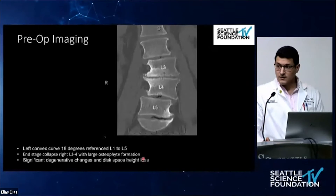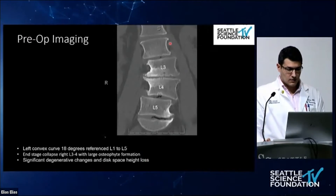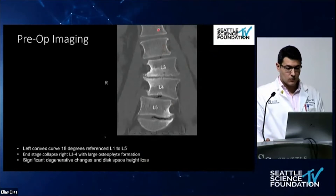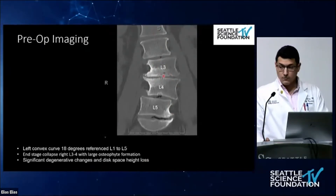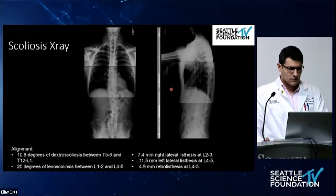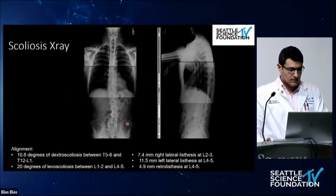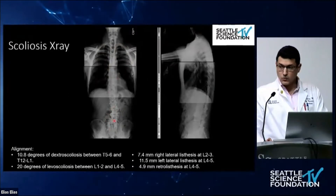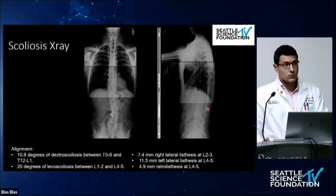This is his pre-op CT scan. He has some left convexity curve around 18 to 20 degrees referenced from L1 to L5. He had also end-stage collapse mainly over L3-4 with large osteophyte formation and multilevel degeneration. Regarding his scoliosis x-ray, he had some dextroscoliosis mainly over the upper thoracic area — again, around 18 to 20 degrees of scoliosis between L1 to L5 — and multilevel lateral listhesis right and left from L2 to L5.